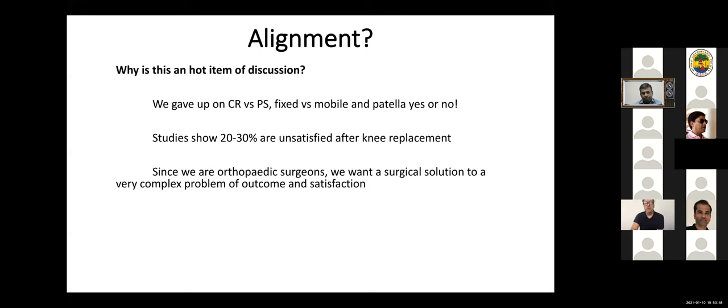Why is this an odd item of discussion? We gave up on CR versus PS, fixed versus mobile, and patella yes or no, but still we see that studies show 20 to 30 percent of our patients are unsatisfied after knee replacement. Since we are orthopedic surgeons, we want a surgical solution to a very complex problem of outcome and satisfaction. We don't want to think about patient selection with their expectations or psychosocial factors. We don't discuss surgical indication, which should be bone-to-bone osteoarthritis, but as we all know, many of the painful patients we see back for second or third opinion usually didn't have this. We never discuss technical execution and training, and we don't want to know that resurfacing a soft tissue joint—I mean by that cartilage, menisci and soft tissues, collateral ligaments—are now resurfaced with metal and plastic. So what do we do? We try to find this in alignment.